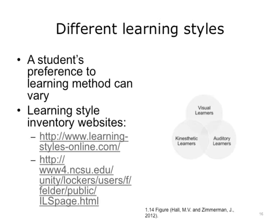Some people are stronger auditory learners and learn through listening. These people learn best through verbal lectures, discussion, talking things through, and listening to what others have to say. Auditory learners interpret the underlying meanings of speech through listening to tone of voice, pitch, speed, and other nuances. Written information may have little meaning until it's actually heard. These learners often benefit from reading text out loud or using a tape recorder.